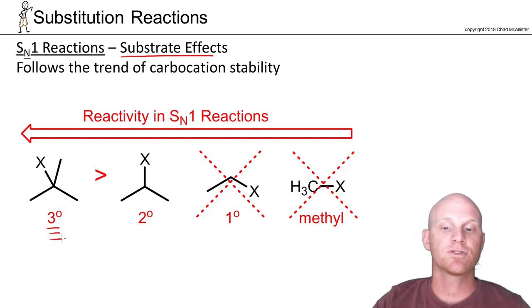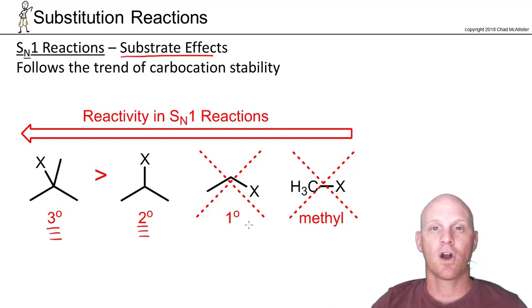We find that tertiary halides are the most reactive in SN1 reactions, followed by secondary. And then generally, methyl and primary halides don't react in SN1 reactions. The carbocation would not be stable enough to form.